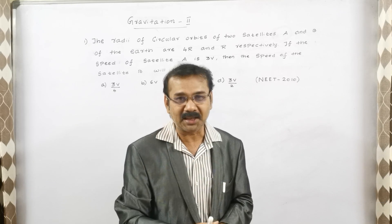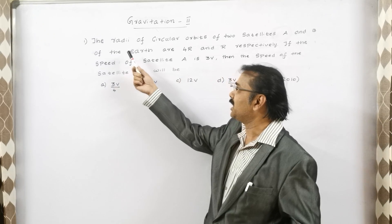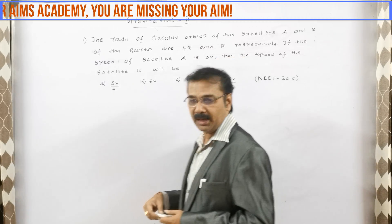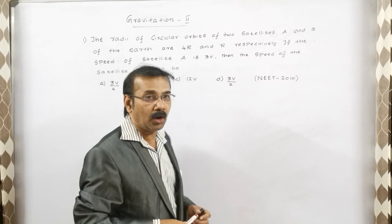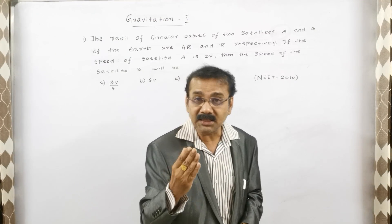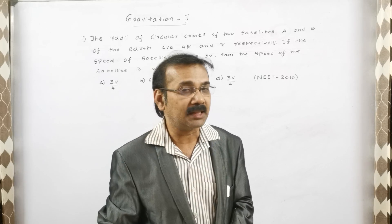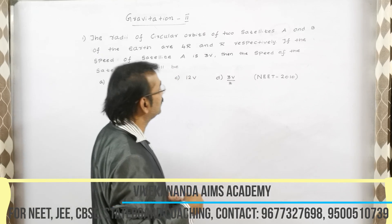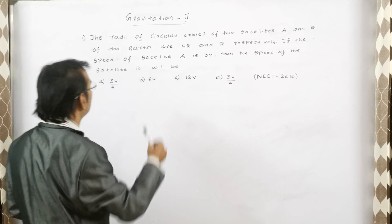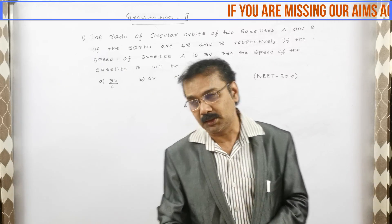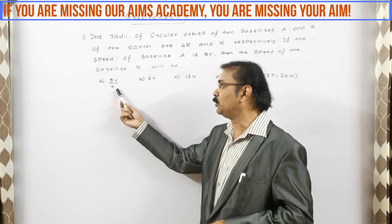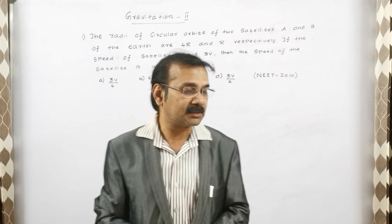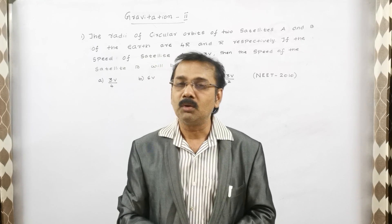Now let us go for the question in the lesson of gravitation. The ratio of orbital radii of two satellites A and B are 4r and r respectively. If the speed of satellite A is 3p, then the speed of satellite B will be — with options: 3p/4, 6p, 12p, and 3p/2. This question was asked in the NEET 2010 exam.